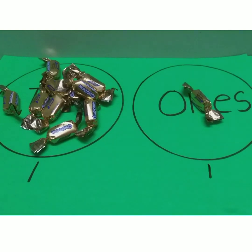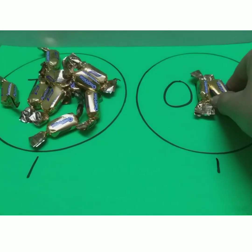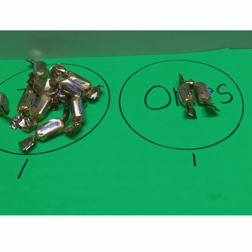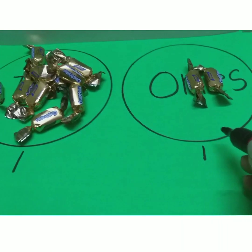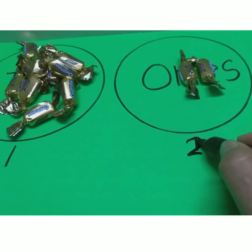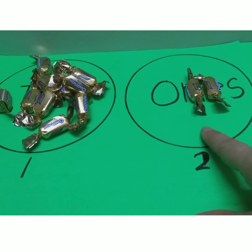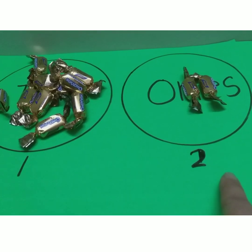Same way, one ten and two ones equal... one ten and this is now two. One ten and two ones equals to twelve.